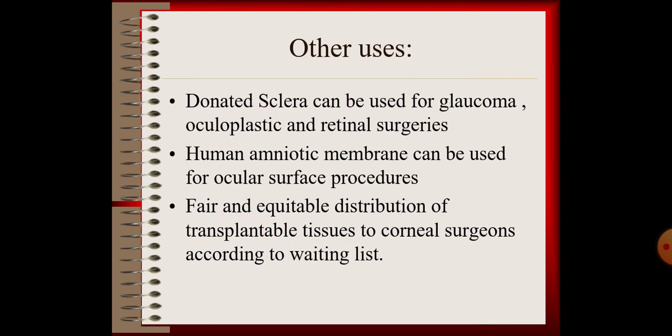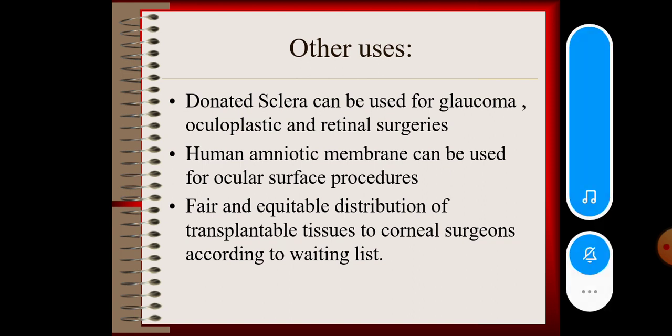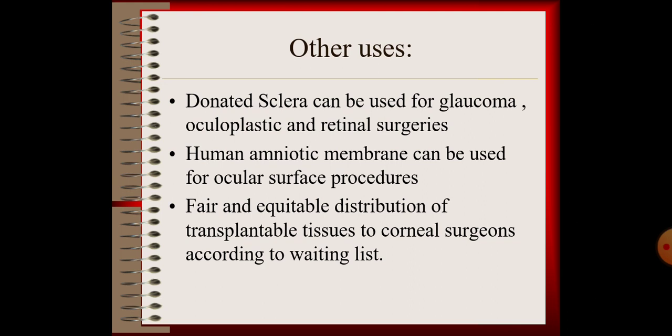What are the other uses of the eye bank? Donated sclera can be used for glaucoma, oculoplastic, and retinal surgeries. Human amniotic membrane can be used for ocular surface procedures. Fair and equitable distribution of transplantable tissues to corneal surgeons is done according to the waiting list.